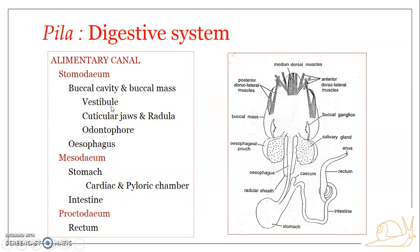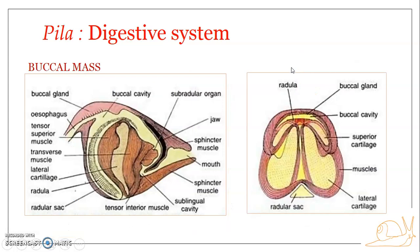The buccal cavity is actually the chamber into which the mouth opens. It is lined by cuticle on its internal surface. The stomodeum as well as the proctodeum are unique in having an internal lining of cuticle, while the mesodeum does not. The buccal cavity is surrounded by a large, thick-walled, highly muscular structure referred to as the buccal mass, which is almost like a pear-shaped structure.